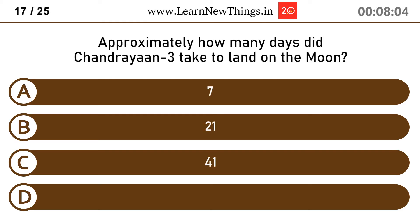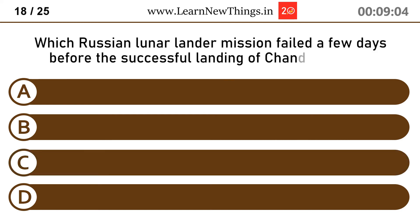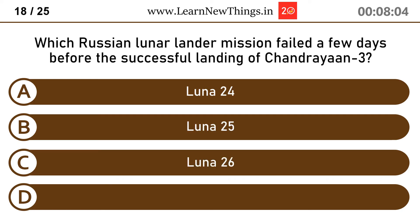Approximately how many days did Chandrayaan 3 take to land on the moon? 41 days. Which Russian lunar lander mission failed a few days before the successful landing of Chandrayaan 3? Luna 25.